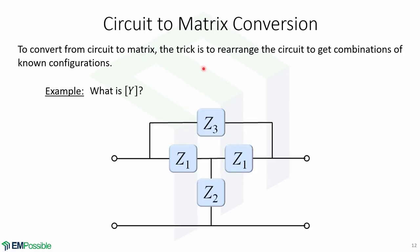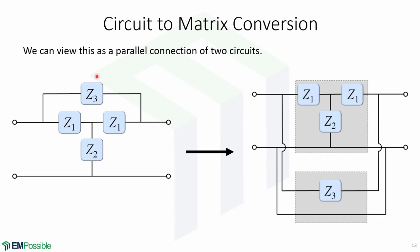Now to convert from circuit to matrix is a little bit more tricky. However, we can rearrange the circuit to get combinations of known configurations. For example, we have this bridged T network and we want to find the admittance parameters. We can split this circuit into two and treat this as a parallel connection of two circuits, this T network connected in parallel with this simple network.